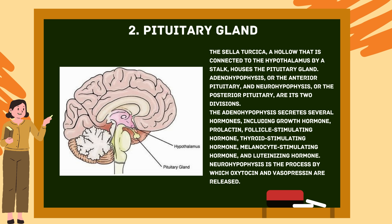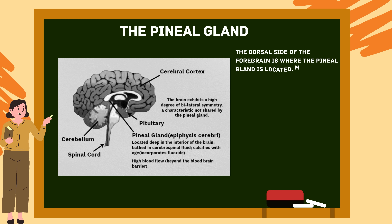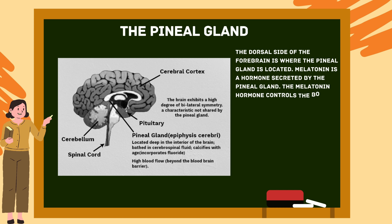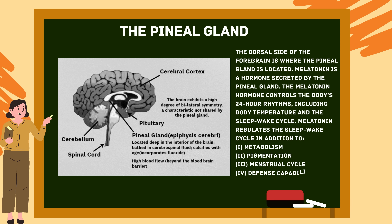Next is the pineal gland, located on the dorsal side of the forebrain. Melatonin is a hormone secreted by the pineal gland. The melatonin hormone controls the body's 24-hour rhythms including body temperature and the sleep-wake cycle. Melatonin also regulates metabolism, pigmentation, the menstrual cycle, and defense capability.